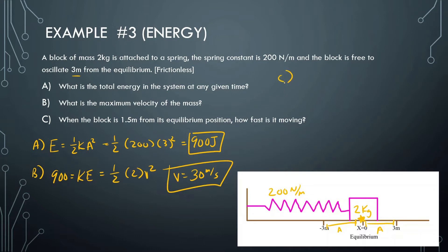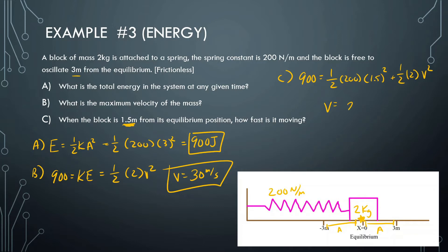Part C: when the block is 1.5 meters from its equilibrium position, how fast is it moving? The total energy is 900, and some will be kinetic and some will be elastic potential energy. So 900 equals one-half k (200) times 1.5 squared, plus one-half the mass (2) times v squared. Doing the math — 900 minus 1.5 squared times 100 — we get a velocity of around 25.98 meters per second.